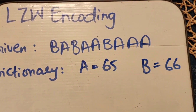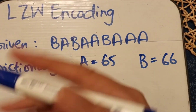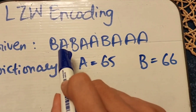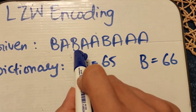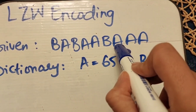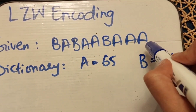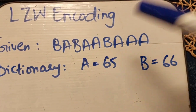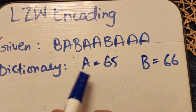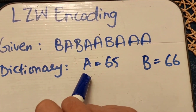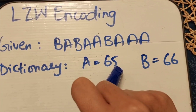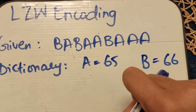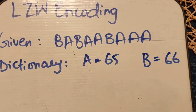The given string is 'b a b b a b a a a'. This string needs to be encoded. The dictionary given is: 'a' is represented by code 65, and 'b' is represented by code 66.